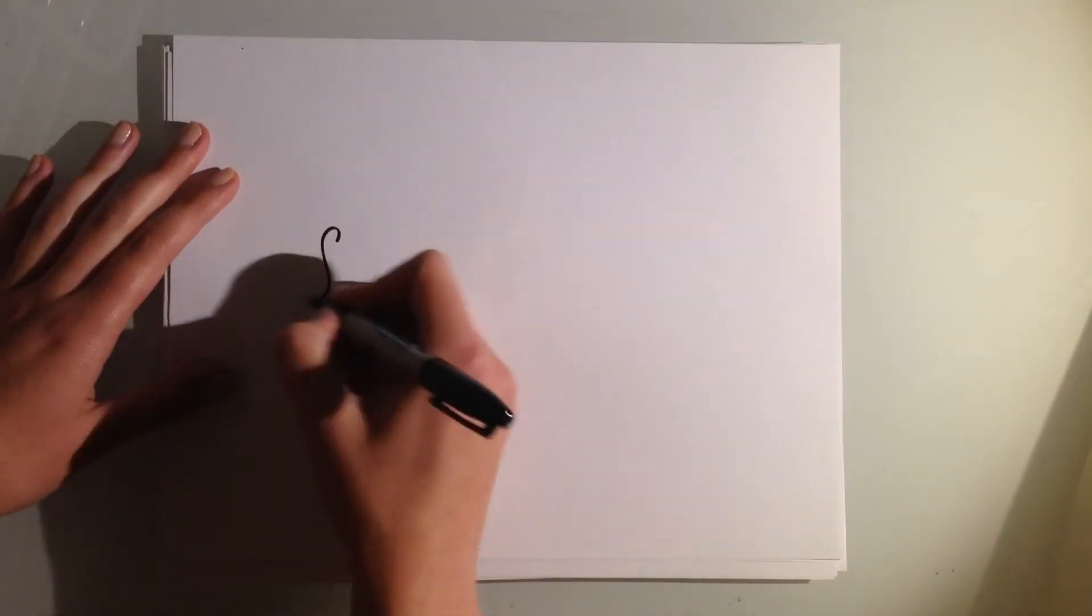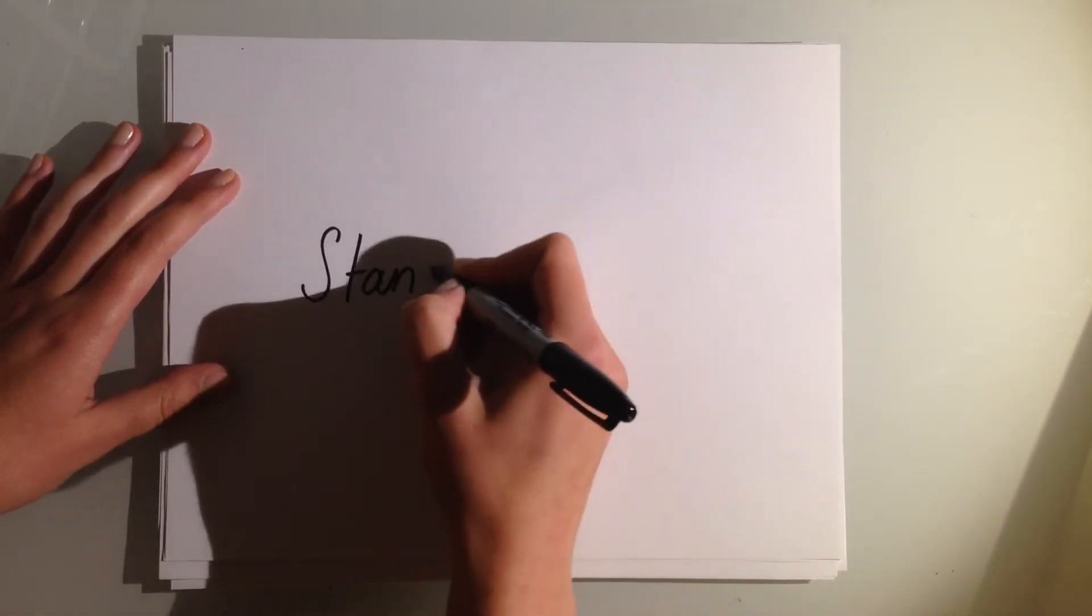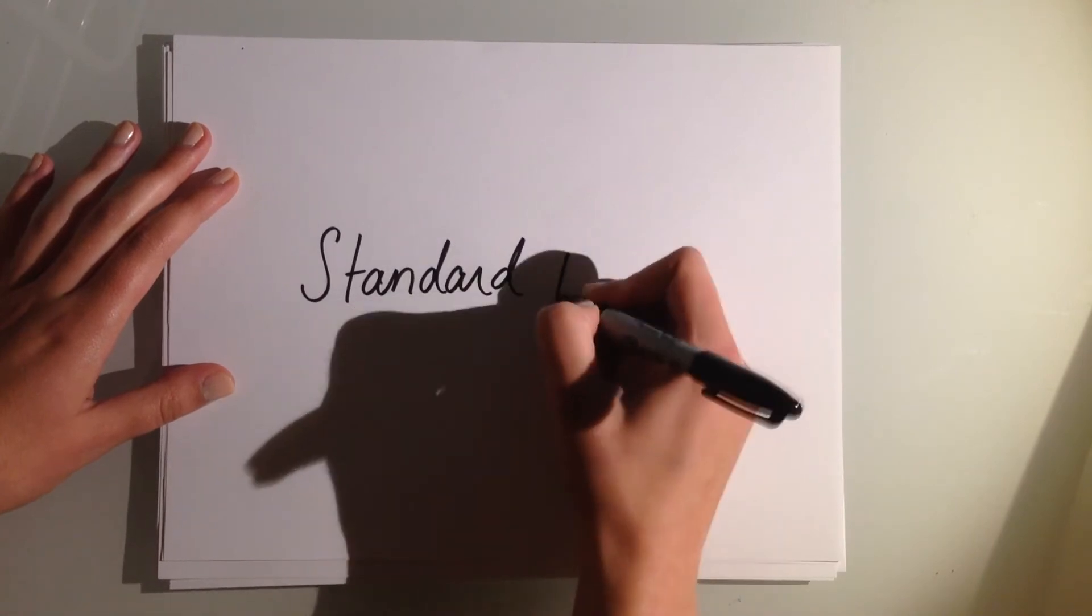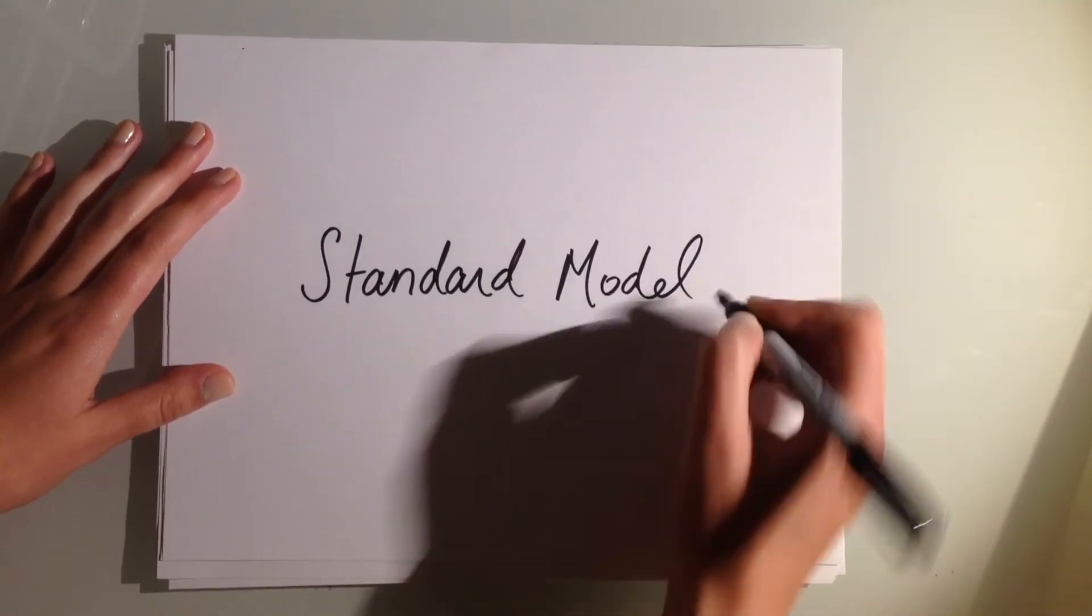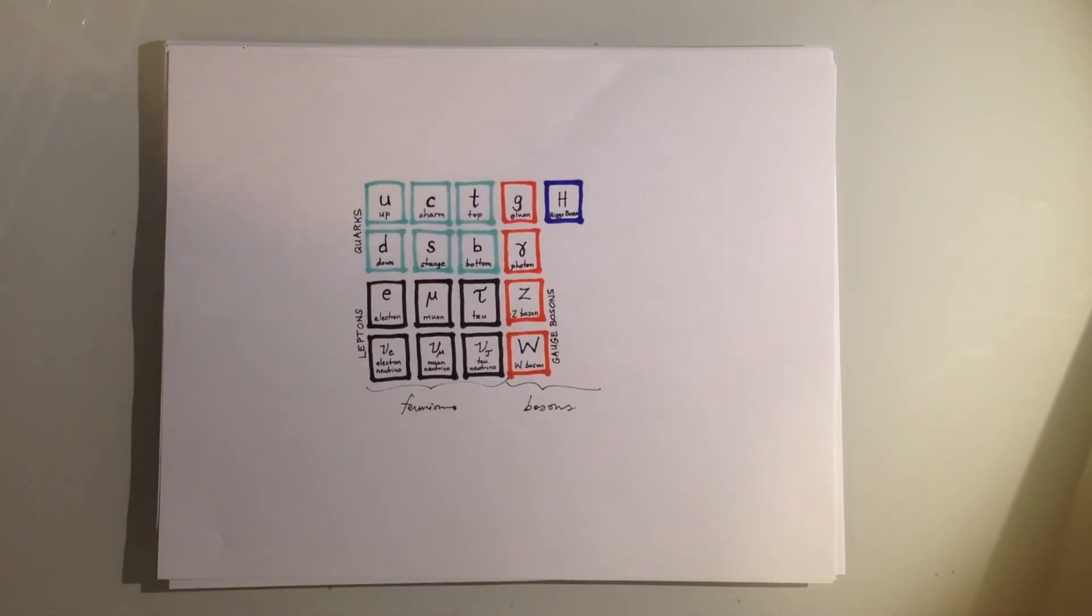But what does this have to do with particle physics? Well, modern day particle physics is built around something called the standard model, which is a theory that describes what particles should exist and how they should interact. It looks something like this.